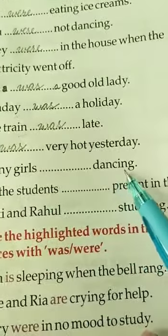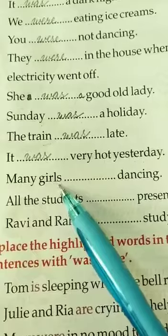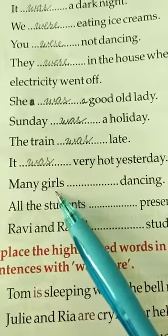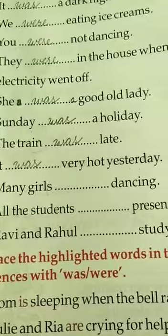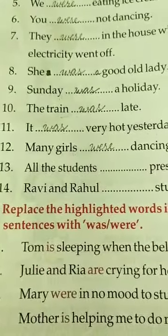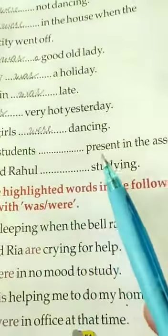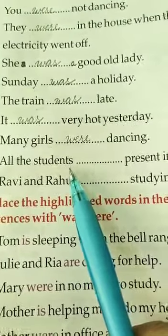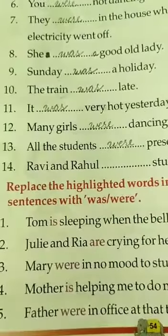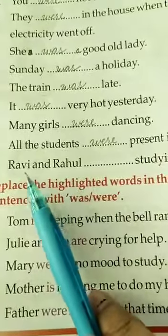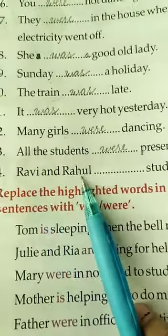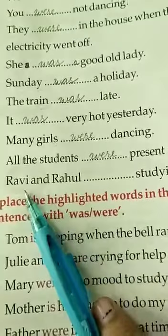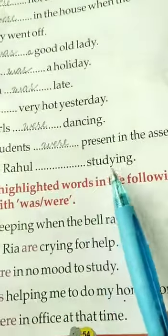Twelfth part: 'Many girls ___ dancing.' Here 'girls' refers to more than one girl, so it is a plural noun. We write 'were'. Answer: Many girls were dancing. Thirteenth: 'All these students ___ present in the assembly.' Students is a plural noun, so we use 'were'. Fourteenth: 'Ravi and Rahul ___ studying.' Here there are two names, making it plural. So we use 'were'. Answer: Ravi and Rahul were studying.